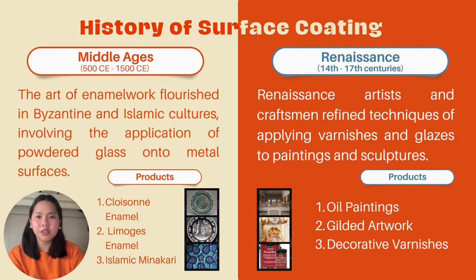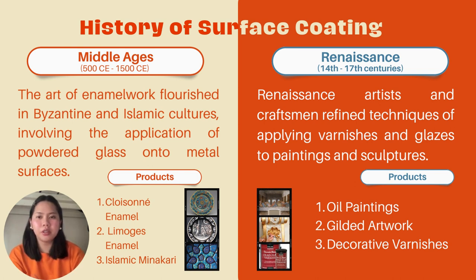During the Middle Ages, surface coating history witnessed a continuation of Asian techniques and the emergence of new methods influenced by cultural exchanges and technological advancements. Coatings during this period served both decorative and practical purposes, enriching artistic expression and protection of various surfaces. Products from the Middle Ages include Cloisonné enamel, an intricate enamel coating applied to metal objects like jewelry and religious artifacts; Limoges enamel, a fine enamel coating on copper objects popular during the medieval period in Europe; and Islamic Minakari, an enamel work used to decorate metalware like vases, plates, and bowls.